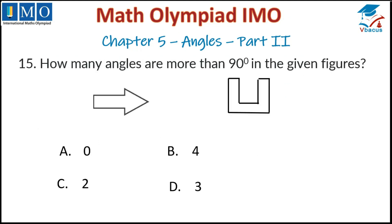Question number 15: How many angles are more than 90 degrees in the given figure? This is 90, this is 90, this is obtuse, this is obtuse — those are more than 90 degrees. This is acute, this is acute, this is acute, 90, 90, 90, this is obtuse, this is obtuse. So four angles in total are more than 90 degrees. Option B is correct.